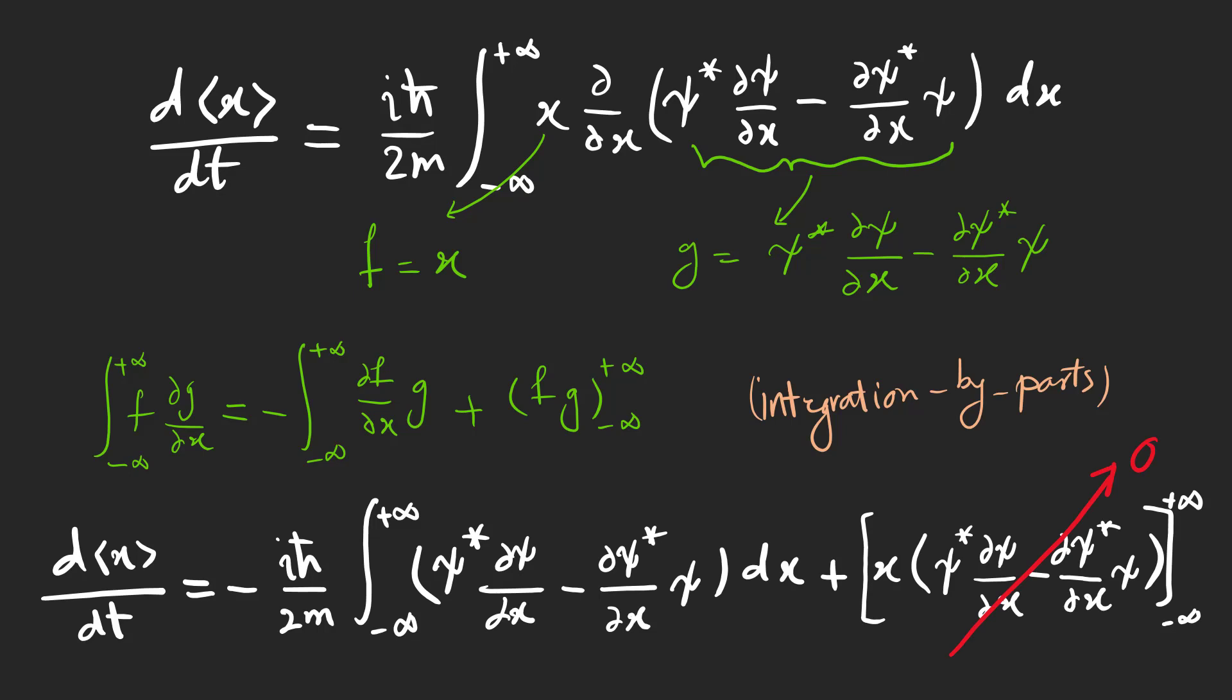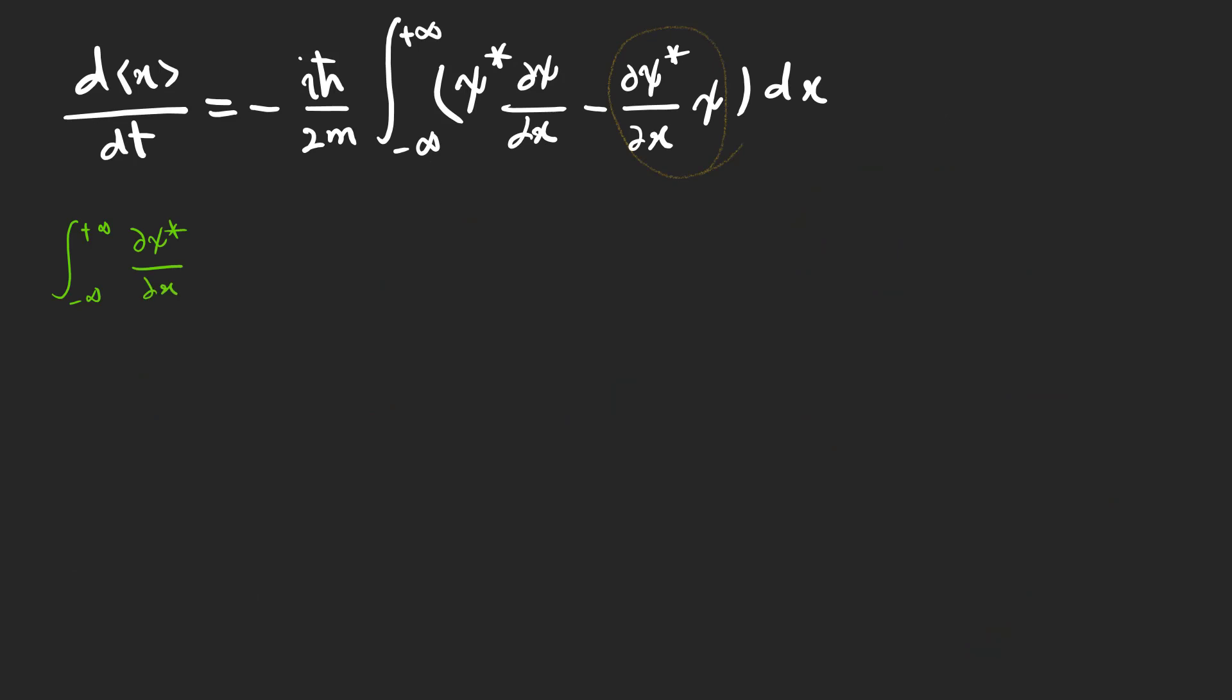The second part should be 0, because psi cannot go to infinity and should be 0 based on the previous video. Another integration by parts on the second part of this integral gives an even simpler equation. Note that the second term here should go to 0 too.